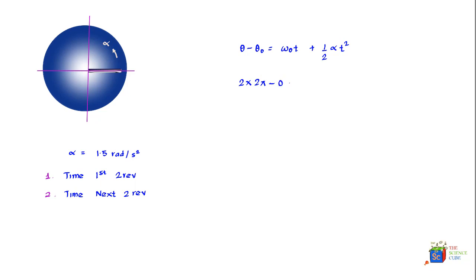We substitute: 2π - 0 = 0 + ½(1.5 rad/s²)t². Solving for t, we find t = 4.09 seconds. Let's label this as the first part. The second part of the problem is: how much time does it take to do the next two revolutions?